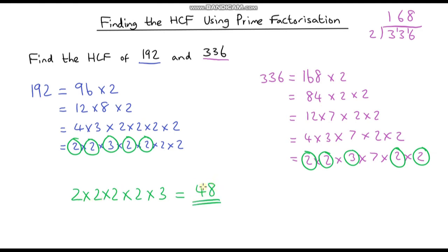You may think this method takes a long time, but in reality it would take much longer to list all the factors of two numbers, and there's a good chance you might miss some. For example, you might not have spotted that 48 is a factor of both 192 and 336 by listing. By breaking them into prime factors, we can be sure we have the highest common factor. Thanks for watching — see you in the next video. Take care.